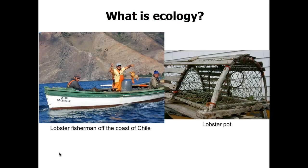Ecology is the study of how components of an ecosystem interact. A lot of what we do as humans depends on agriculture, hunting, or fishing. For example, consider the lobster industry — fishermen off the coast of Chile who hunt lobsters using lobster pots. How many lobsters should they be able to catch each season so they can make money, feed people, and still have enough lobsters remaining to breed continuously and survive as a resource?